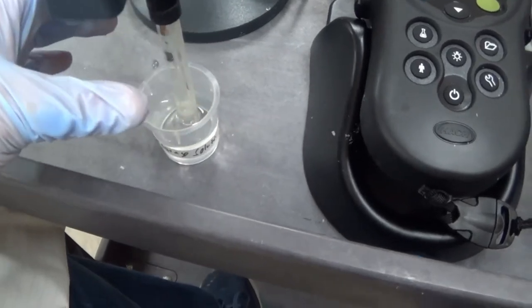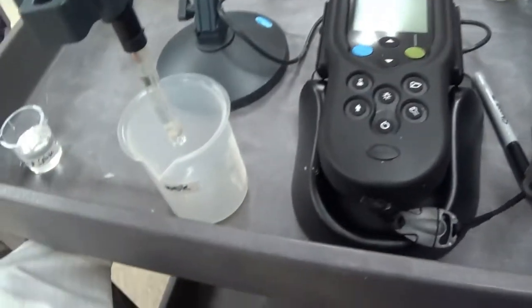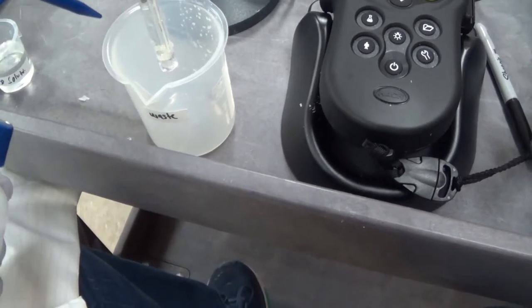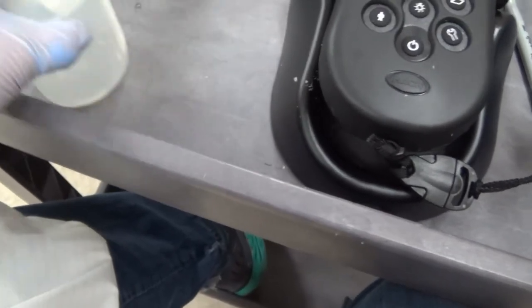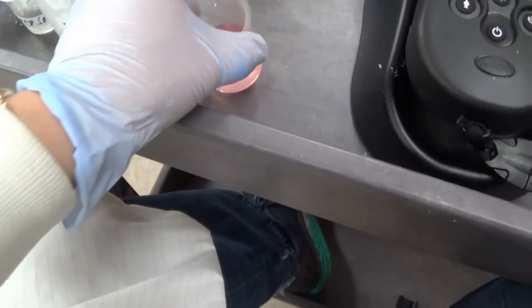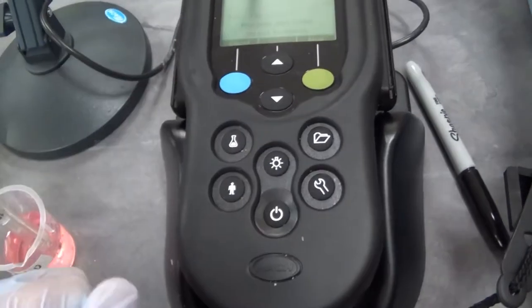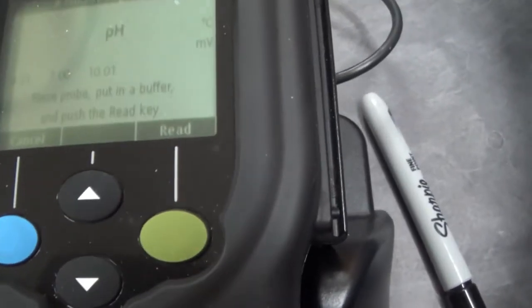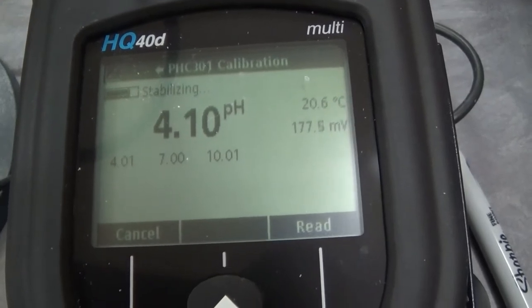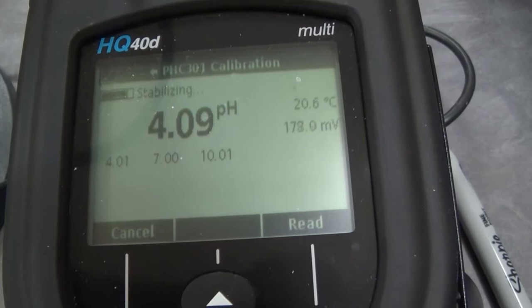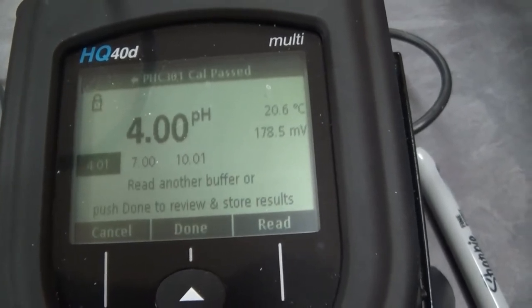I am going to lift my probe out of the storage solution, rinse it off, blot it dry, and put it into my 4 standard. Hit calibrate. Rinse probe, put it in a buffer, and push the read key. Read. See it is stabilizing. It is done.